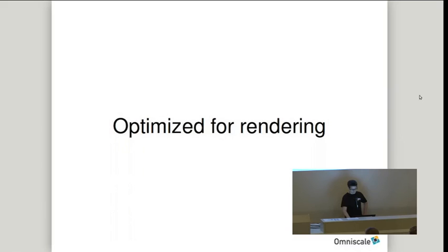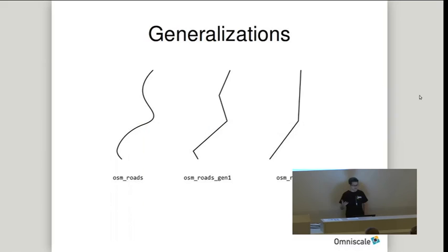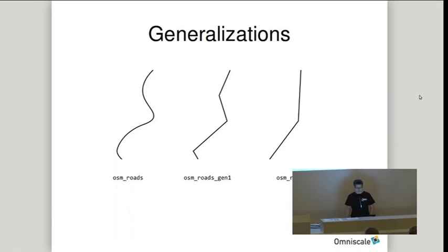We also have the goal to make the import optimized for rendering, so we implemented generalizations. That means we have multiple copies of the same table with simplified geometries. In this case we have roads in three generalizations. When you render lower zoom levels you can use those simplified geometries.